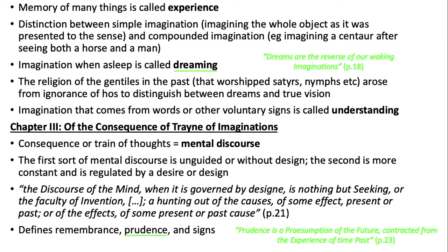Imagination that comes from words or other voluntary signs is called understanding. I'm going quickly through all of this because it's important but not yet pivotal for his political theory, which is what I'm focusing on. He says that the consequence or train of thoughts is called mental discourse. The first sort is unguided or without design; the second is more constant, regulated by a desire or design. The discourse of the mind when governed by design is nothing but seeking — hunting out the causes of some effect present or past, or the effects of some present or past cause. He defines remembrance, prudence and signs, and says that prudence is a presumption of the future contracted from the experience of time past.